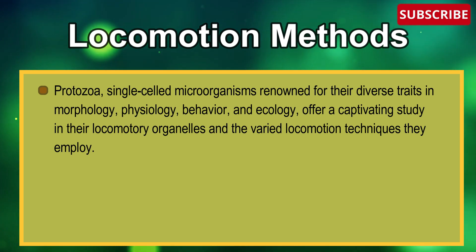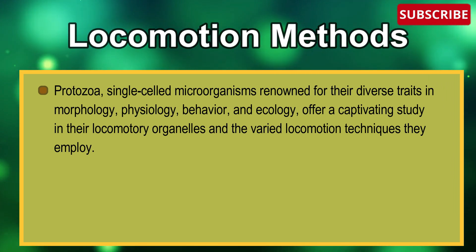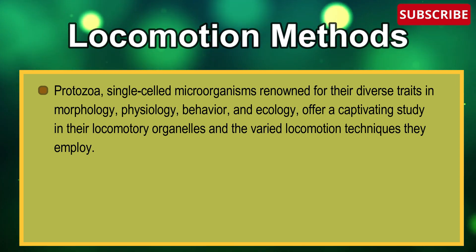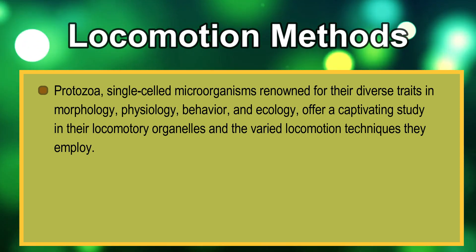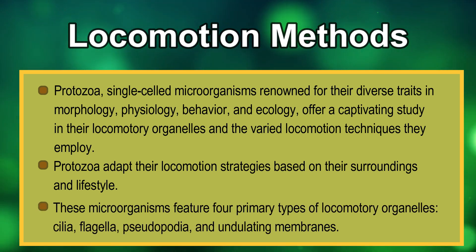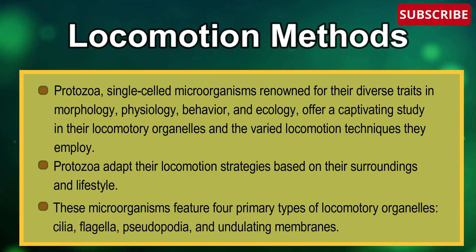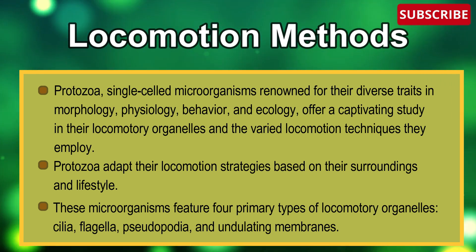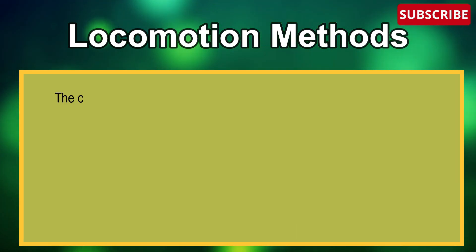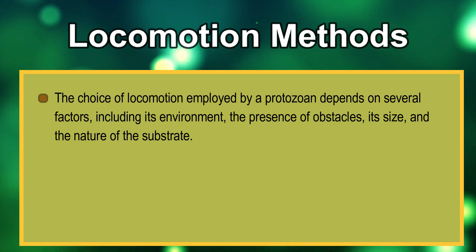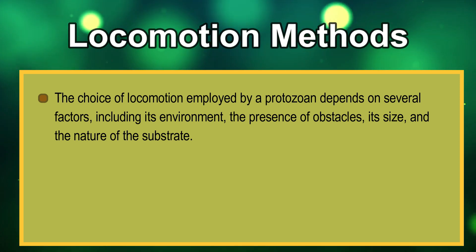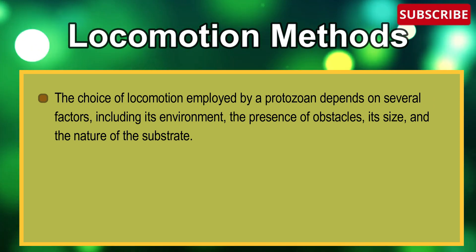Next: locomotion methods of protozoa. Protozoa are single-celled microorganisms renowned for their diverse morphology, physiology, behavior, and ecology, offering a captivating study in their locomotory organelles and the varied locomotion techniques they employ. Protozoa adopt their locomotion strategies based on their surroundings and lifestyle. These microorganisms feature four primary types of locomotory organelles: cilia, flagella, pseudopodia, and undulating membranes. The choice of locomotion depends on several factors including the environment, the presence of obstacles, the organism's size, and the nature of the substrate.